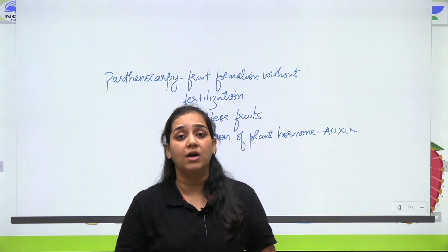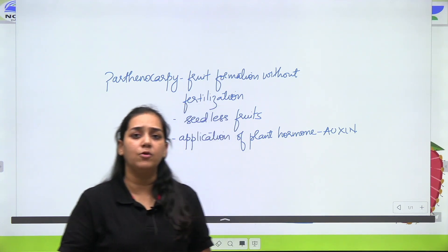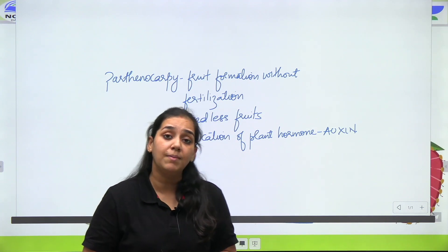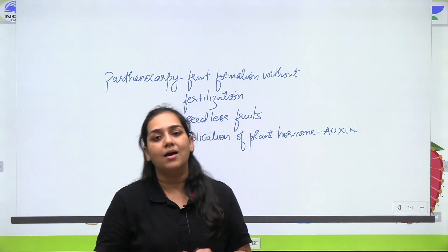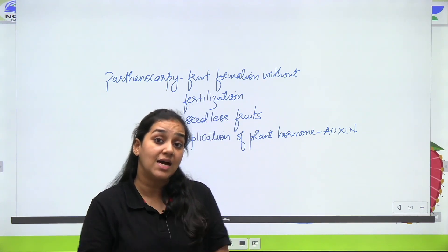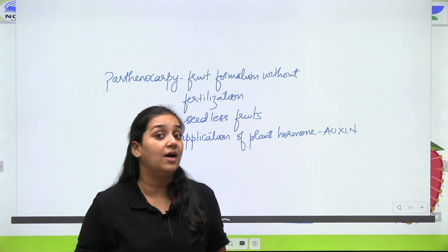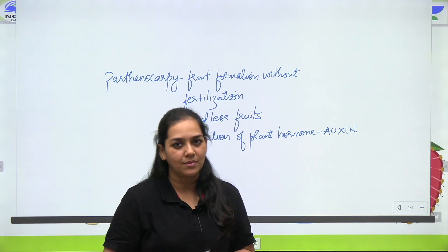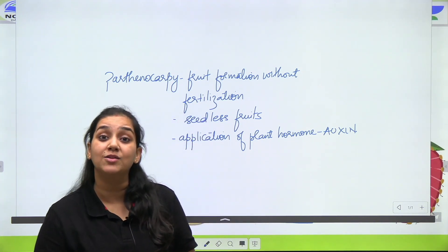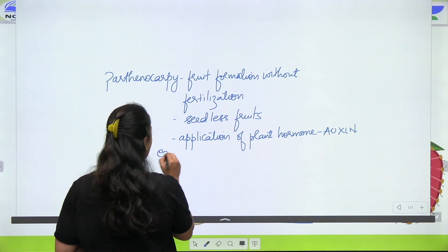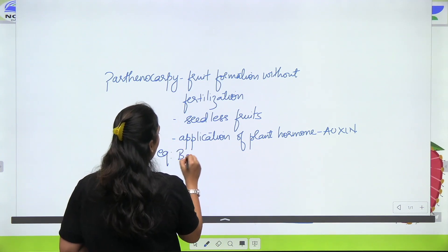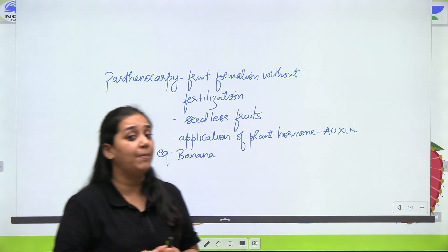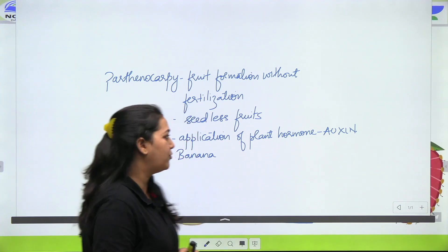Aap jab kisi plant ko auxin ki taraf expose karoge, when you expose a plant to auxin, then you can induce parthenocarpy in certain plants. Yeh nahi bol raha ki yeh universal hai ki har plant respond karega — not necessary — but certain plants respond to exposure of auxin. Agar aapne auxin lagaya hai, toh there is a chance ki without fertilization, ovary is transforming into a fruit. Such fruits are called as parthenocarpic fruits.